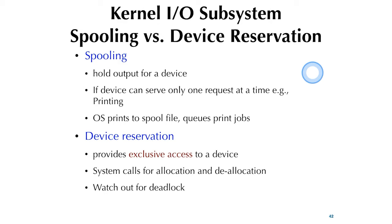Device reservation provides exclusive access to a device. It may involve a system call for allocation and deallocation of the device. A semaphore can be used for this purpose, but watch out for deadlock depending on how many devices you allocate and in what order.